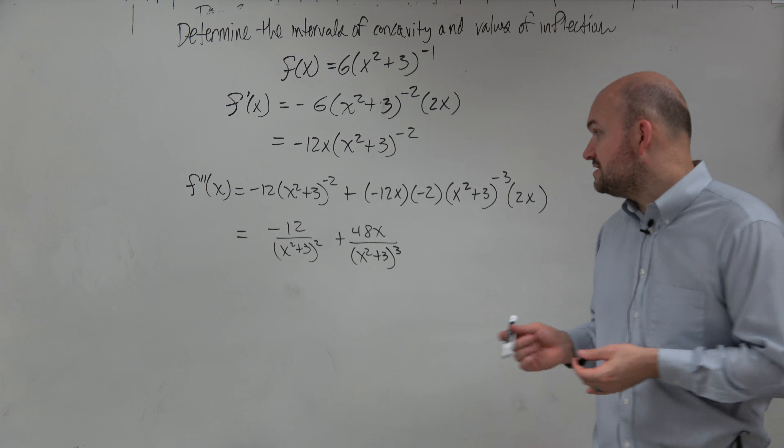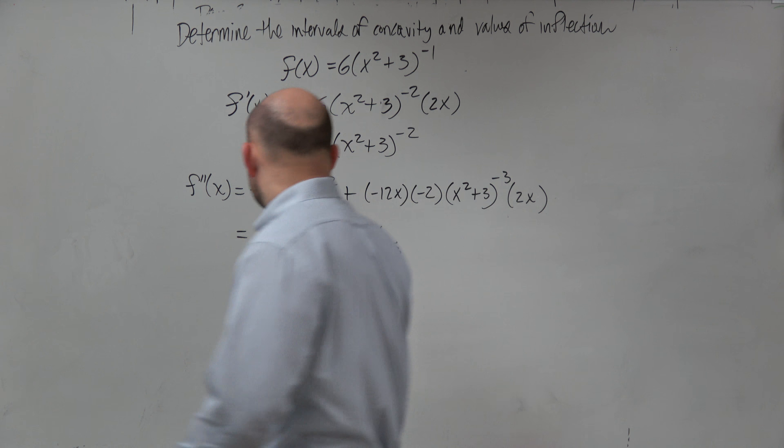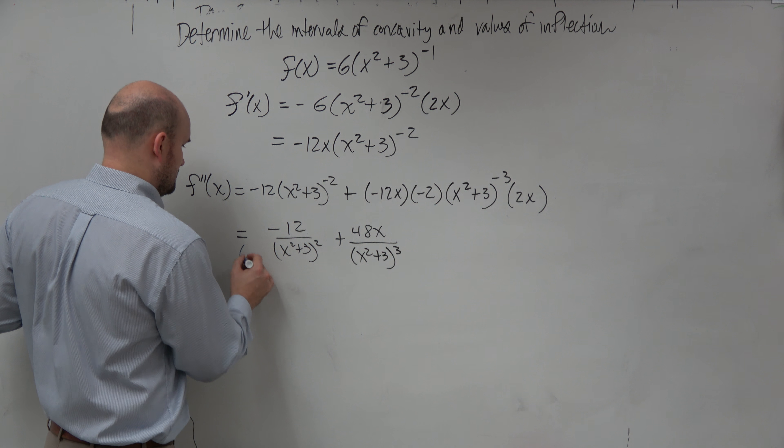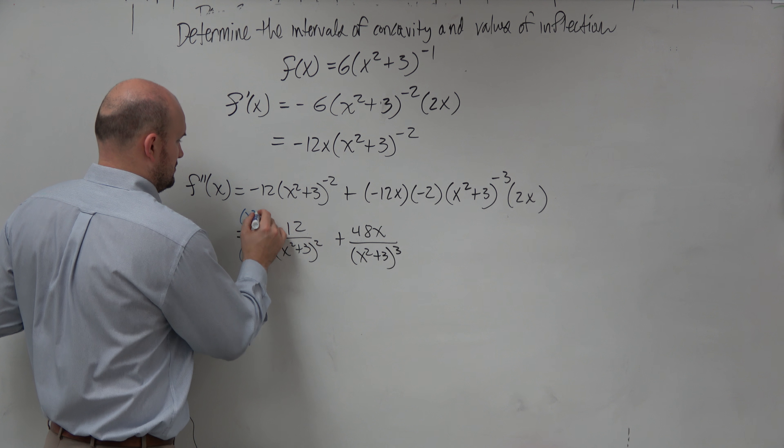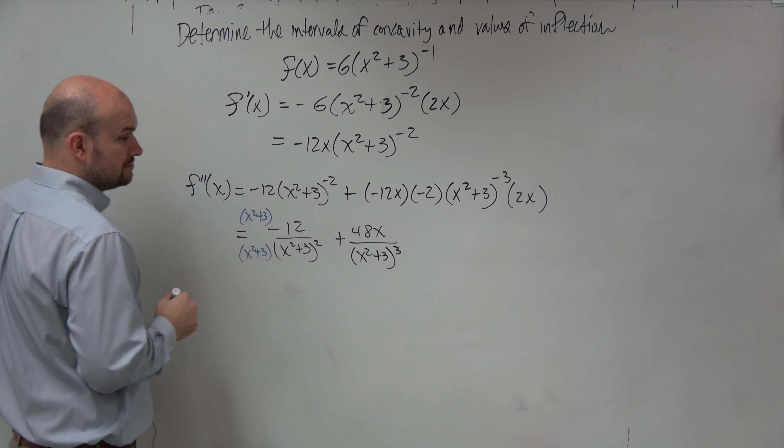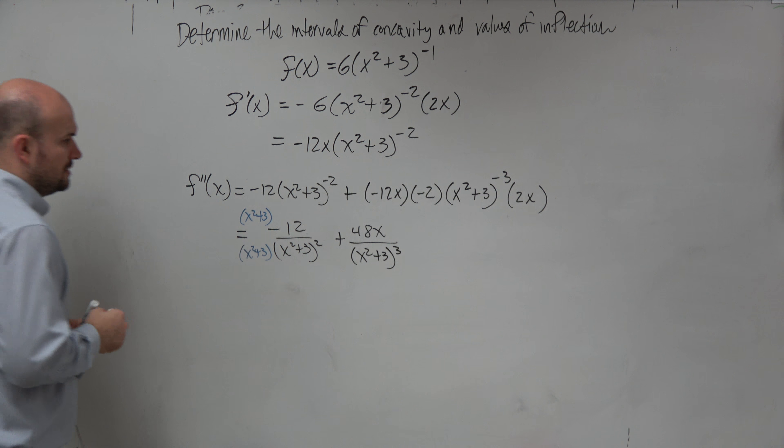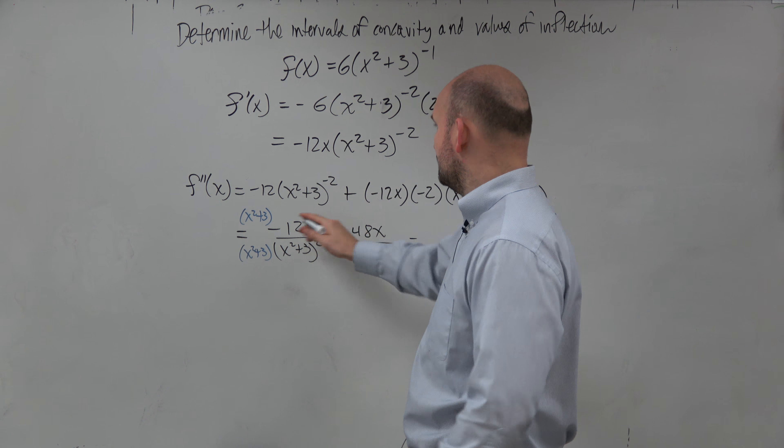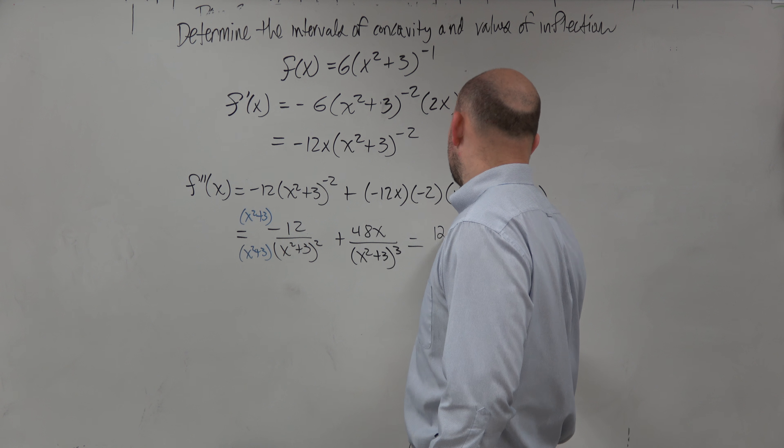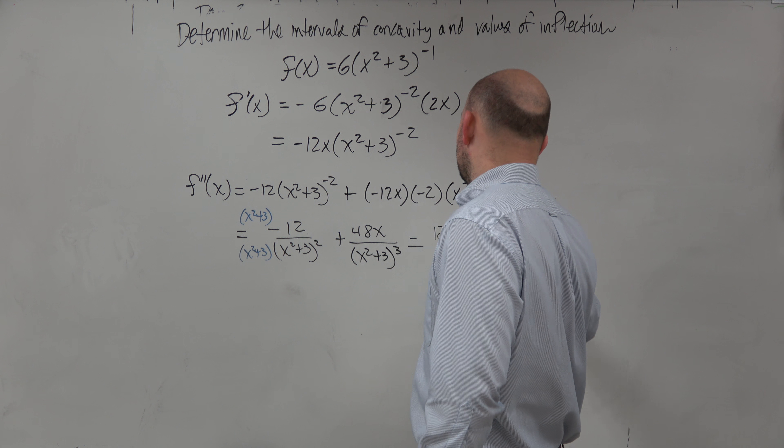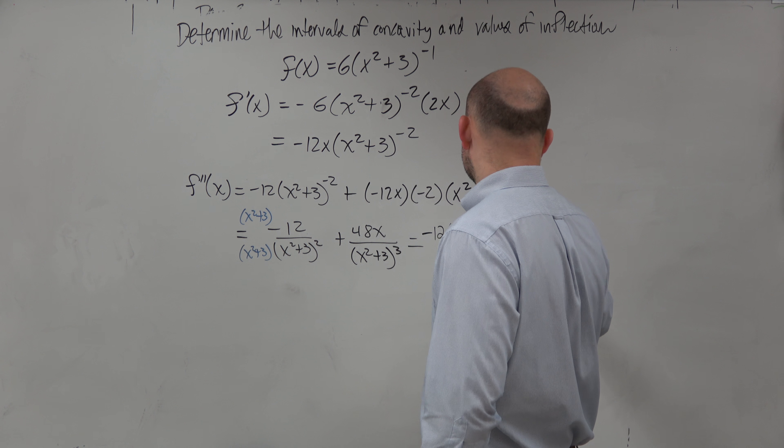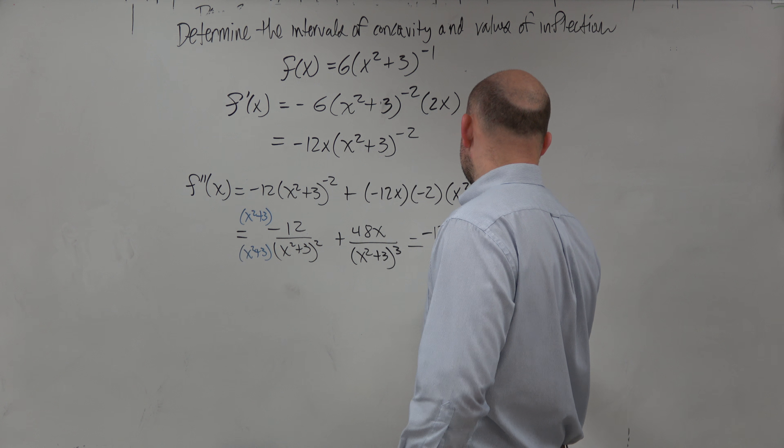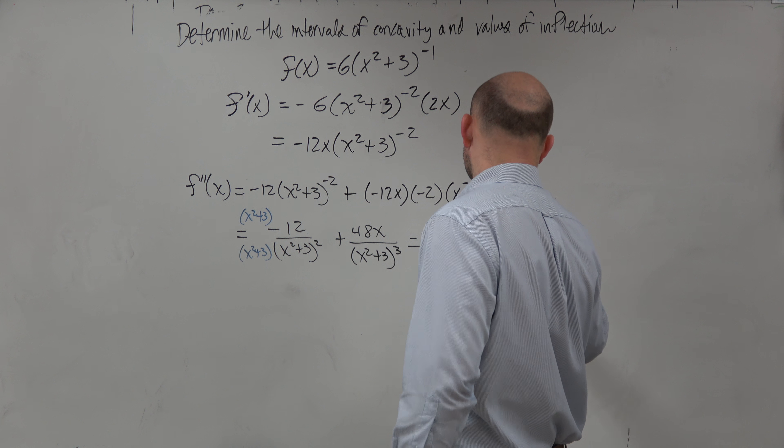Now, if I wanted these to be common denominators, all I need to do is just multiply by an extra x squared plus 3. So when doing that, to save myself a little space, I'm just going to do it over here. I'll have negative 12 times x squared plus 3 plus 48x squared, all over my common denominator of x squared plus 3 cubed.